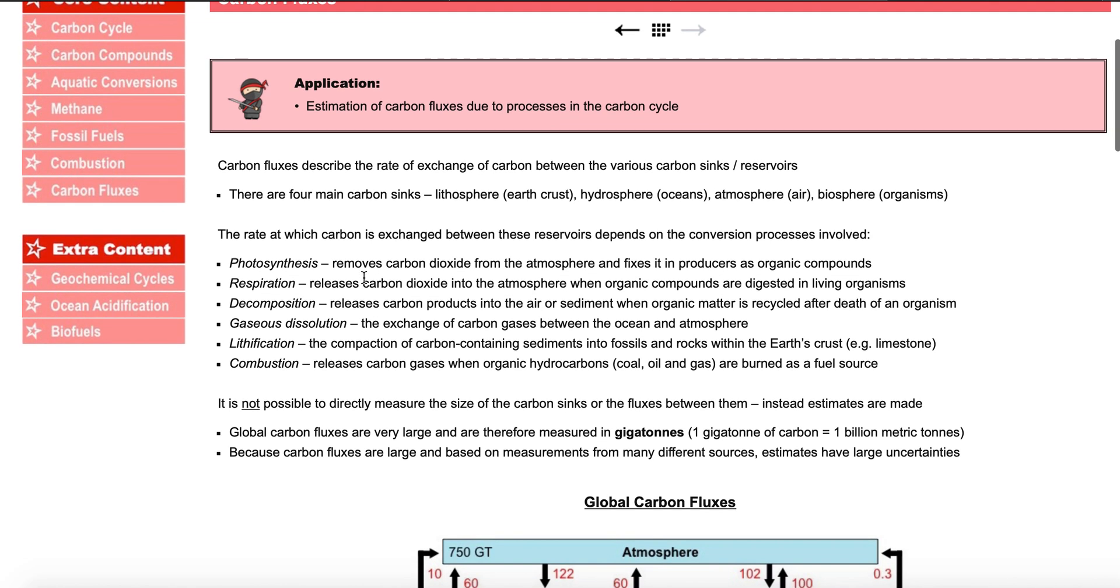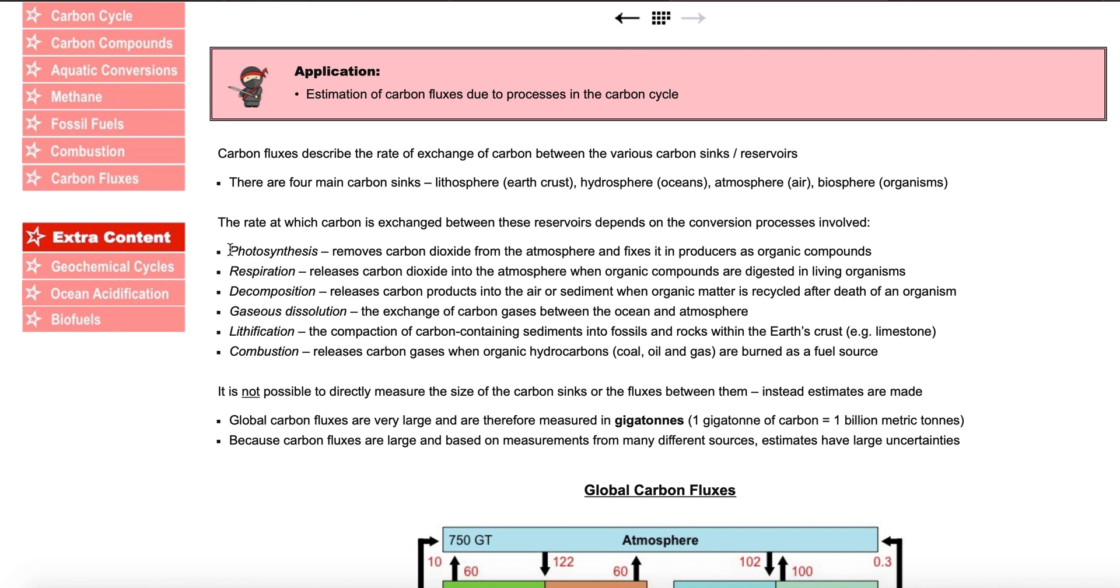So, the BioNinja page, the notes you'll take, talks about the way in which carbon dioxide, well, carbon, can move from one reservoir to another. They're from one place in which it is stored to another.